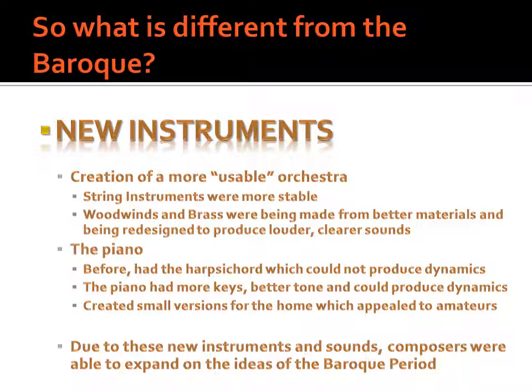What did composers change in music from the Baroque to the classical? There were a few major changes important to know before we talk about the actual elements of music that changed. The first is that composers in the classical era had access to newer instruments, meaning a more usable orchestra was available. Stringed instruments were better defined and more stable, made in specific forms with no fluctuation in quality. Woodwind and brass instruments were also being made more commonly from better materials, redesigned to produce louder, more clear sounds, allowing composers to concentrate on tone color for all instruments in solo and ensemble settings.